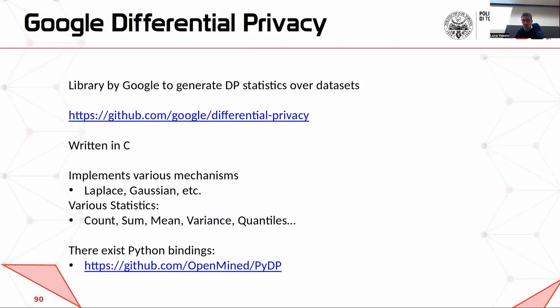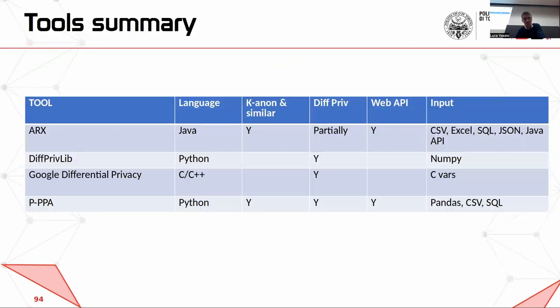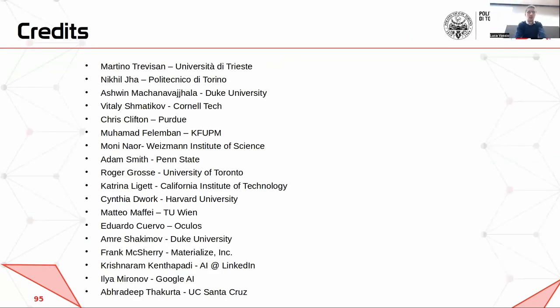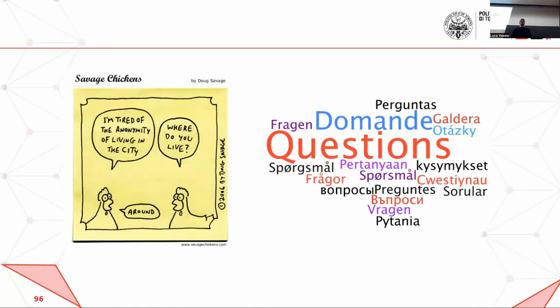Let me go to the end to see if there are any questions. If you have questions, just interrupt me. There's a question: for differential privacy as presented, considering database queries and statistical retrieval — would a single attribute like name or date of birth be able to be differentially private, or at this granularity of specific attributes, would it be k-anonymity?